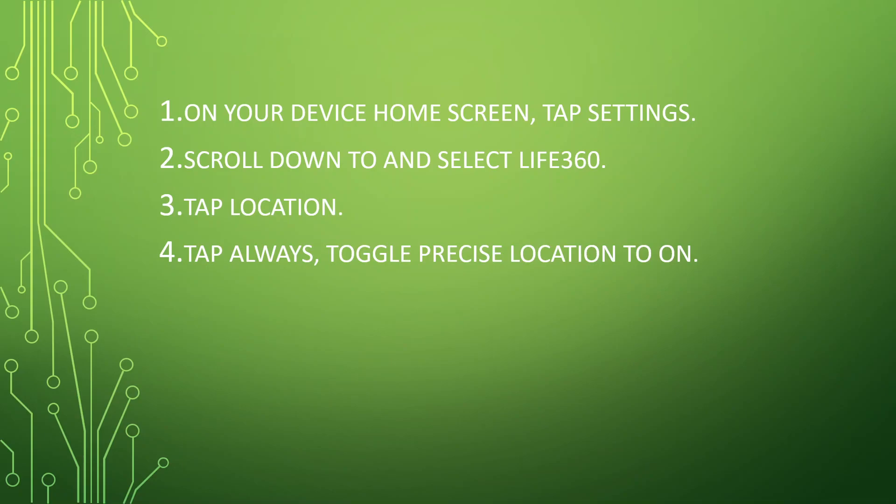On your device home screen, tap Settings. After that, scroll down and select Life360. Tap Locations, tap Always, then toggle Precise Location to on.